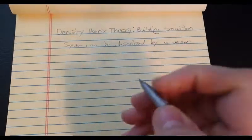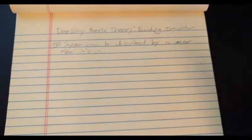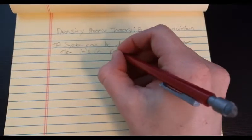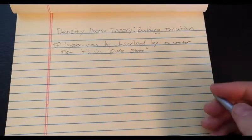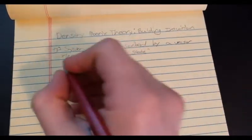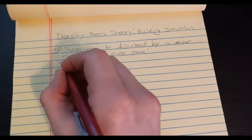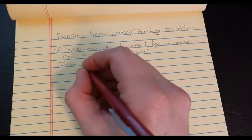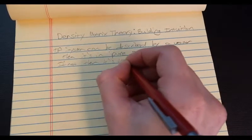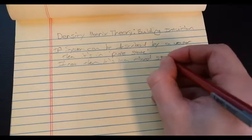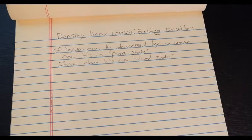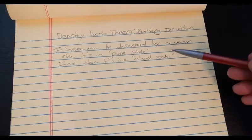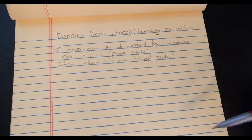If the system can be described this way, then it's in what's called a pure state. If it cannot be described by a single vector or a linear combination of vectors, if not, then it's in a mixed state. So, this pure state and this mixed state is very important terms in density matrix theory. And, initially, they don't make all that much sense.